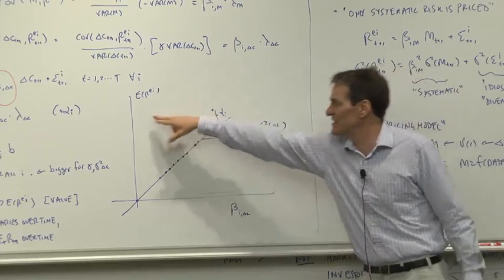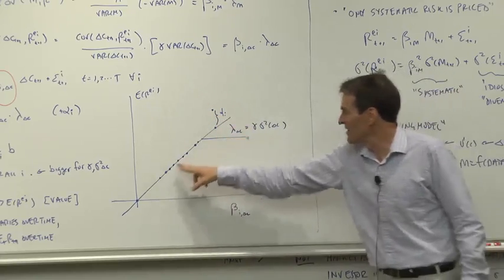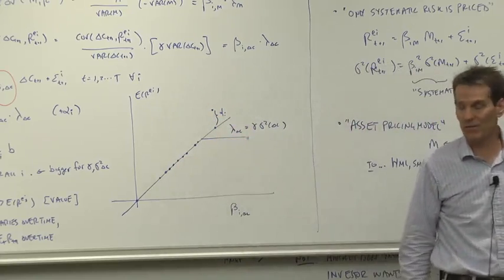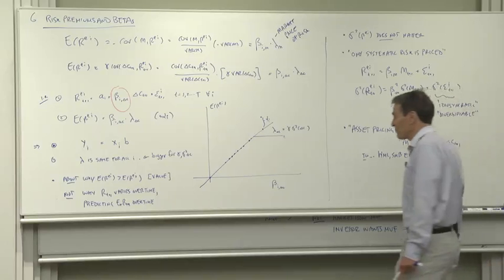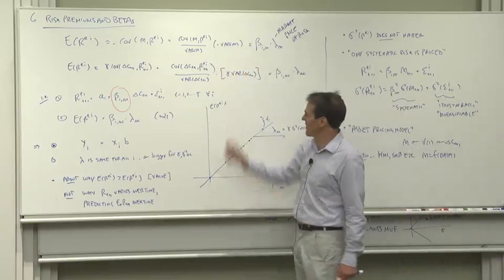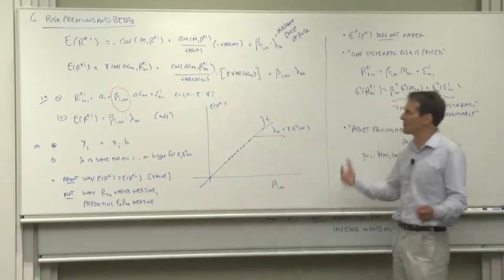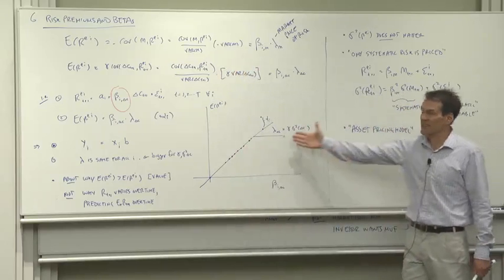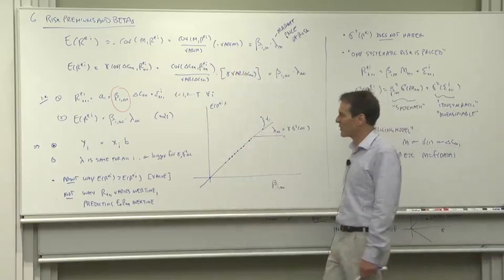Here's an asset with alpha. It's giving its investors higher expected returns than the compensation for risk that they should need to get. So just multiplying and dividing gets us to the standard expected return beta style of model. This is the consumption capital asset pricing model.